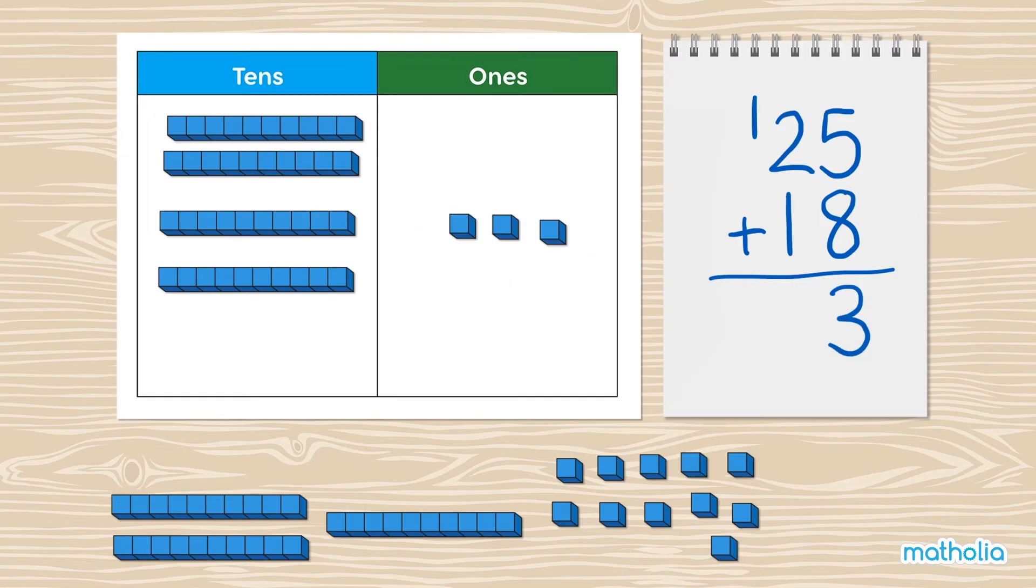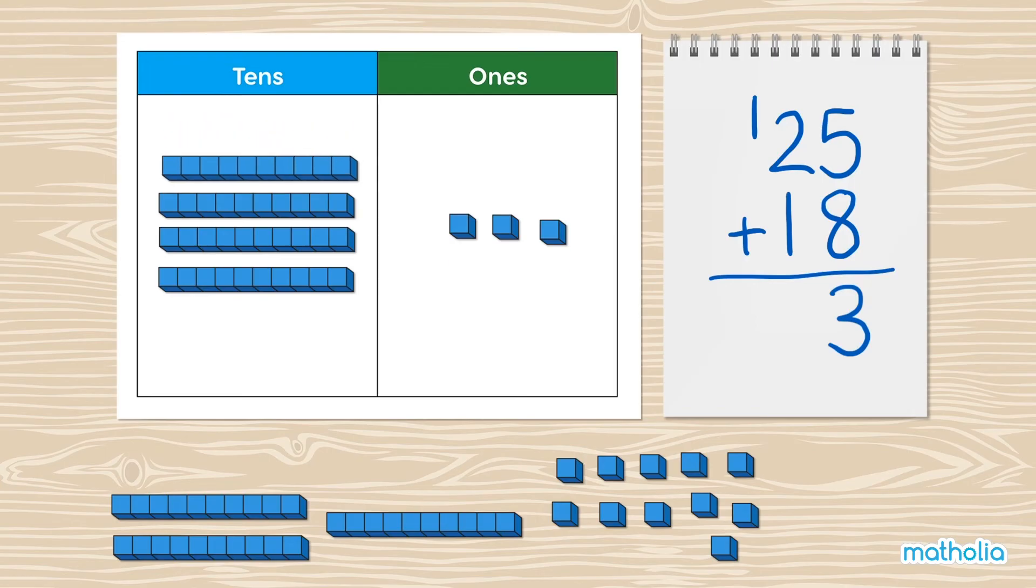Now, bring the tens together. There are 4 tens. Write the 4 in the tens column. 25 plus 18 equals 43.